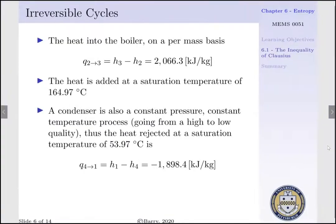The heat into the boiler on a per-mass basis, Q going from state 2 to state 3, is simply our difference of enthalpies — H3 minus H2 — which equals 2066.3 kJ per kg.